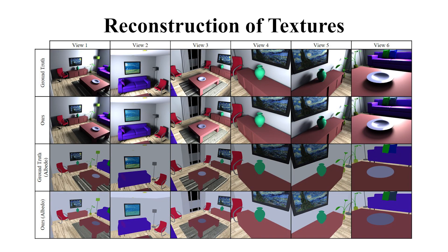To handle textures, we first obtain an estimate of the average albedo over the entire object's surface. We then estimate the albedo of every triangle in the geometry mesh while further subdividing the mesh where needed.